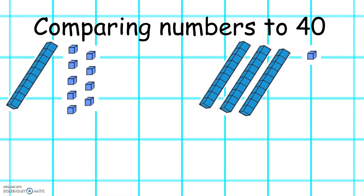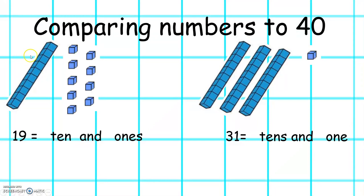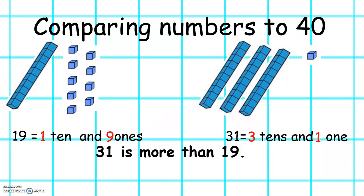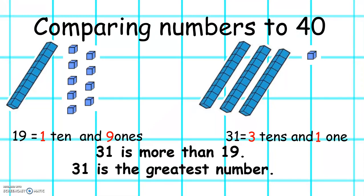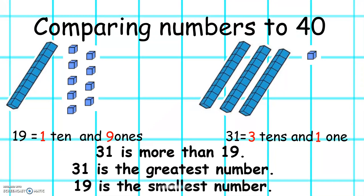Let's look at this one. Here we have 10, 11, 12, 13, 14, 15, 16, 17, 18, 19. And here we have 10, 20, 30, 31. So we can say 31 is the greatest number and 19 is the smallest number.